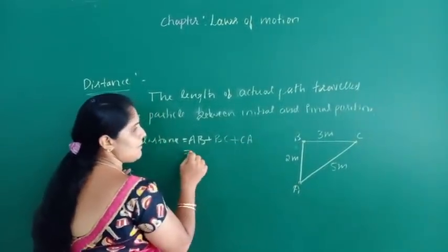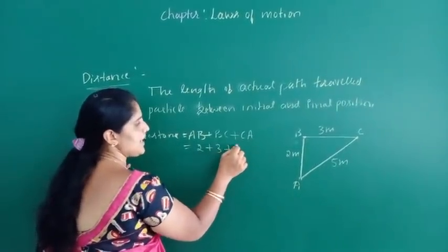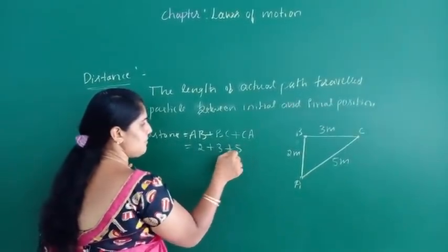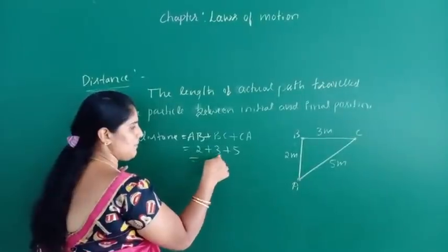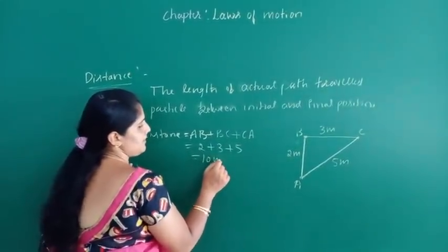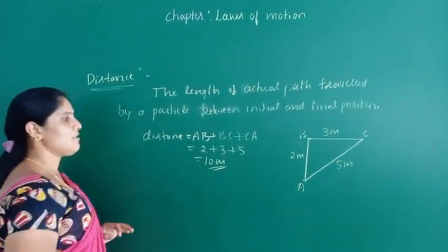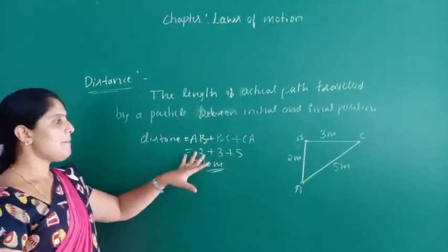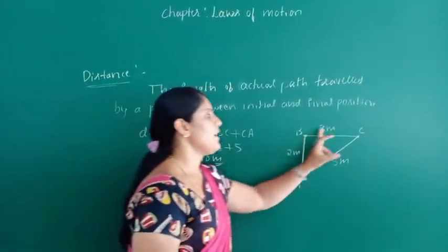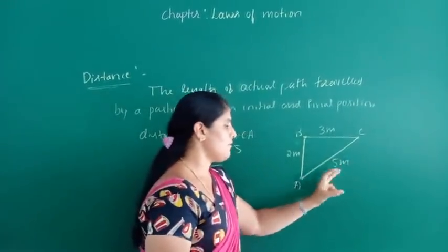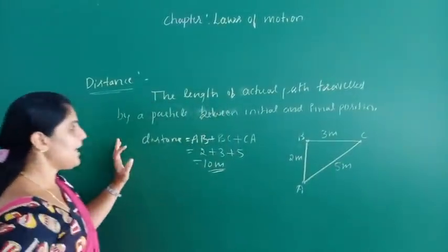So AB is 2 meters, BC is 3 meters, and CA is 5 meters. Total distance is 2 plus 3 plus 5, which equals 10 meters. This is the total distance traveled by the particle which travels from A to B to C and back.